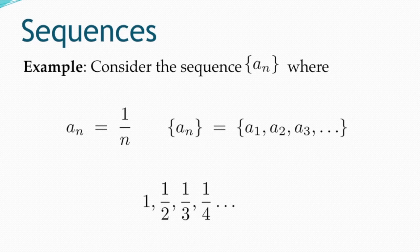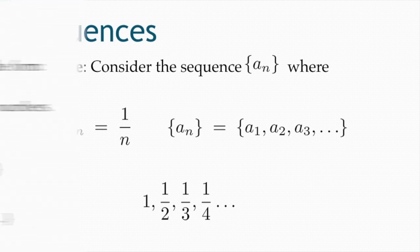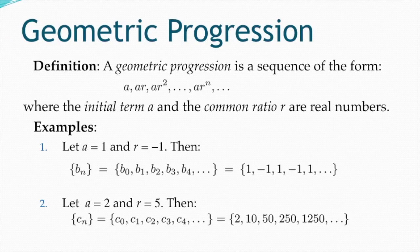A famous sequence is called geometric progression. In geometric progression, the terms take the form: first term a, second term a·r, third term a·r², all the way to a·r^n.